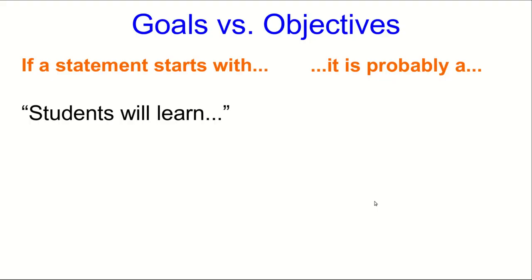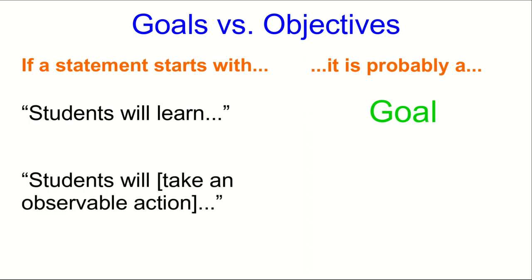Notice that in all the examples I just gave, the goals started with 'students will learn.' Remember, unless you're telepathic you have no way of actually knowing what your students have learned directly — you need for an objective to set a goal of them taking some observable action. Not all goals start with 'students will learn' but many do. But for an objective you need things like: students will state, students will calculate, students will debate, students will critique. Those are all good starts for objectives.